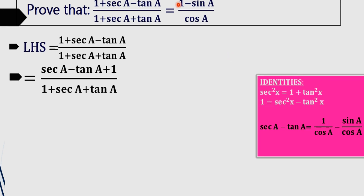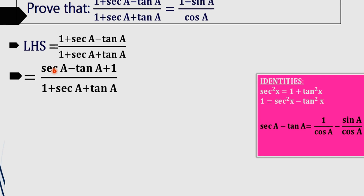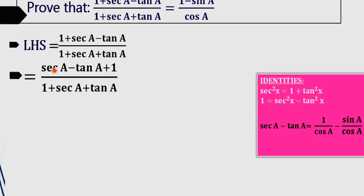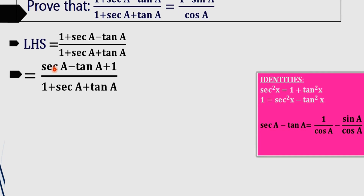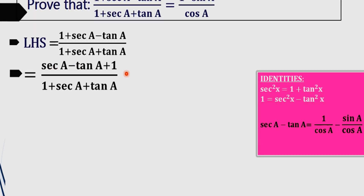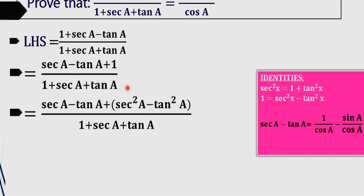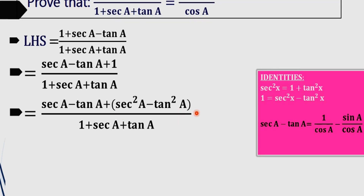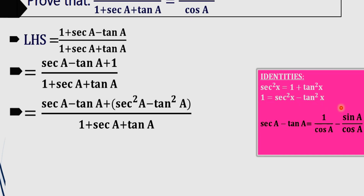Since csc A minus tan A equals our RHS, we need to take csc A minus tan A outside of the numerator. To do so, we rewrite 1 as csc²A minus tan²A, using the identity csc²x = 1 + tan²x, which gives csc²x minus tan²x = 1.